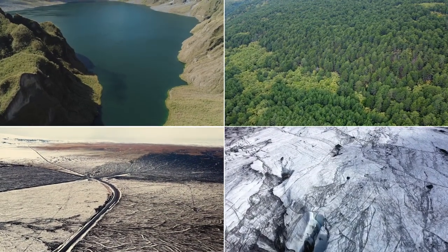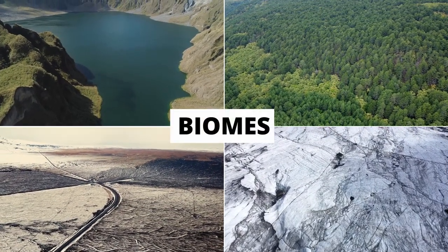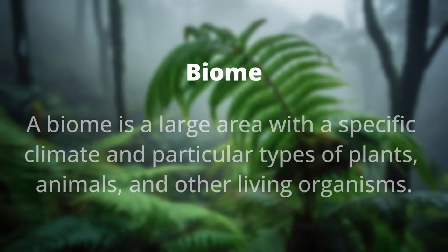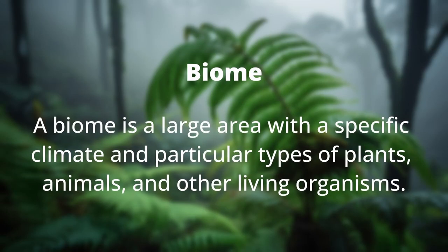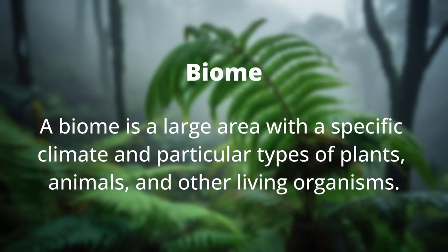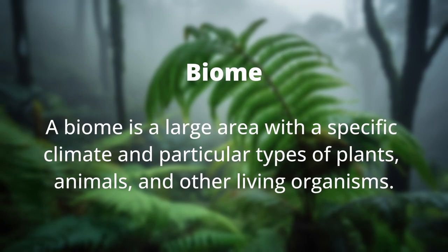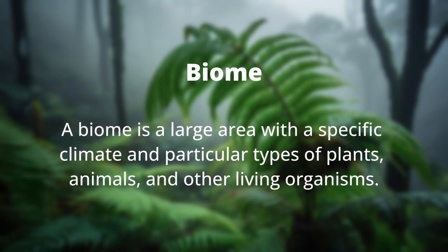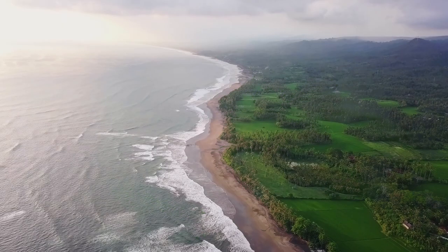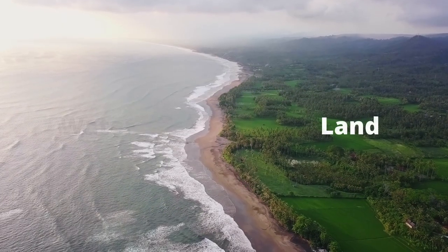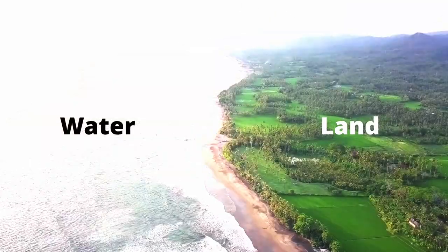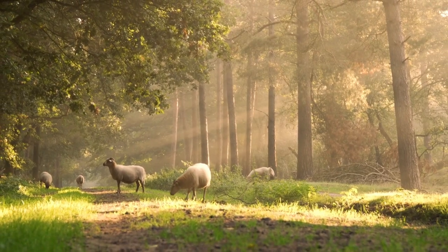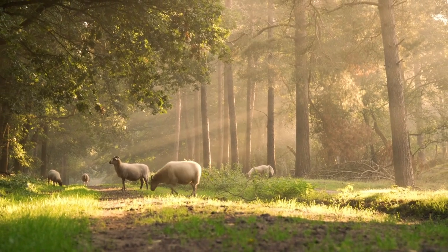These categories are called biomes. A biome is a large area with a specific climate and particular types of plants, animals, and other living organisms. Biomes can be found both on land and in water, and they help us understand how life adapts and survives in different environments.